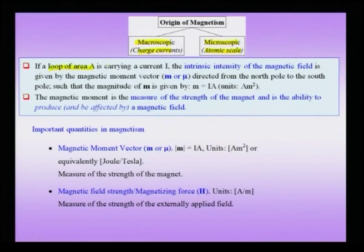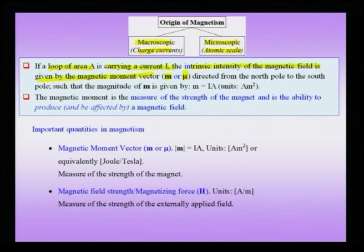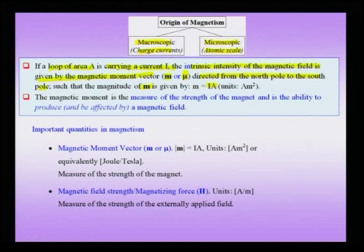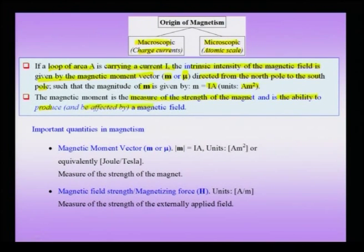If you have a loop of area A carrying a current I, the intrinsic intensity of the magnetic field is given by the magnetic moment vector, typically given the symbol m or mu, directed from the north pole to the south pole such that the magnitude of m is given by I times A. The magnitude of the magnetic moment is I times A and has units of ampere meter squared. This magnetic moment is a fundamental quantity — a measure of the strength of the magnet and its ability to produce and be affected by a magnetic field.